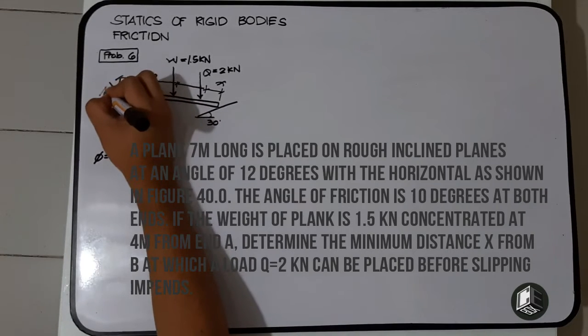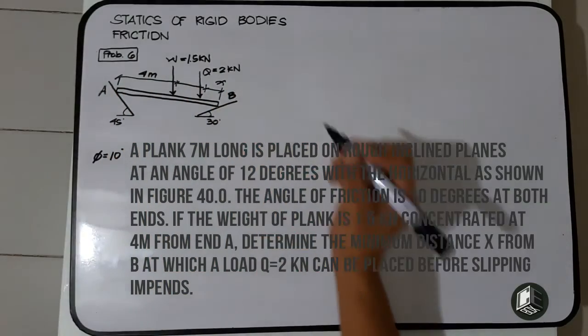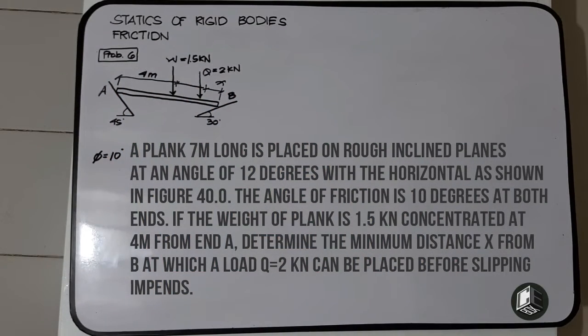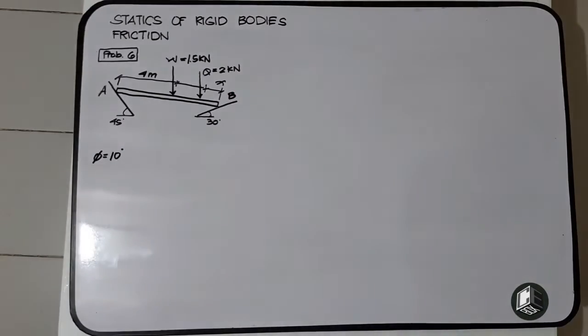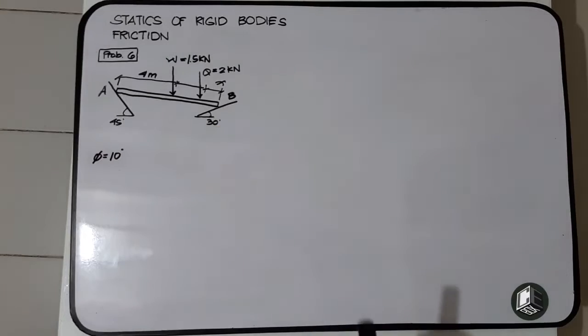This is our end A and this is our end B. Determine the minimum distance x from B at which a load Q equal to 2 kilonewtons can be placed before slipping impends.